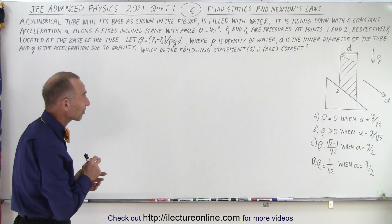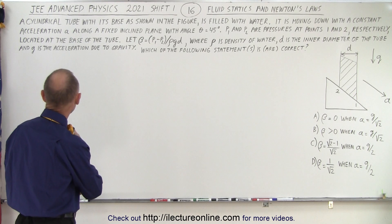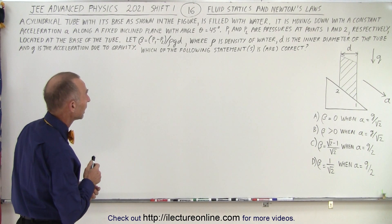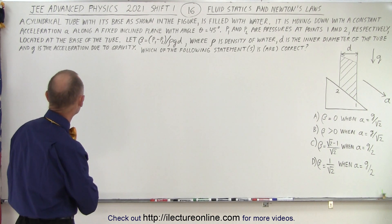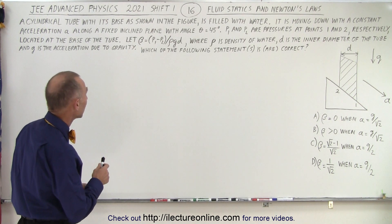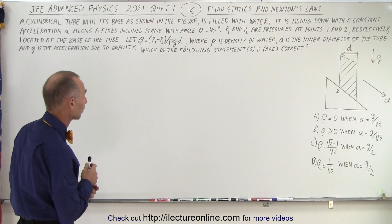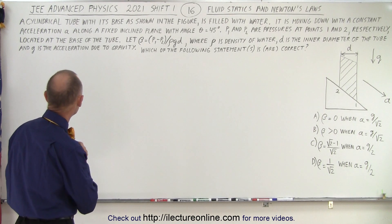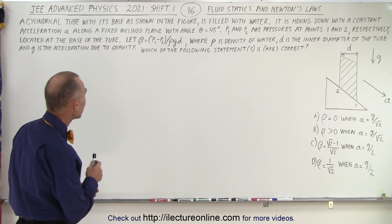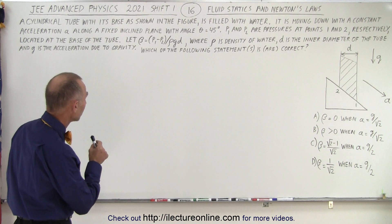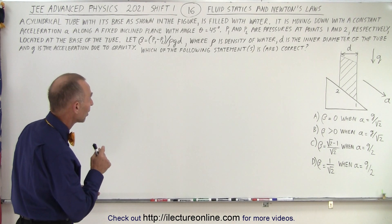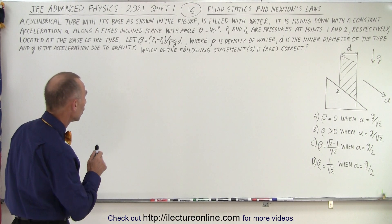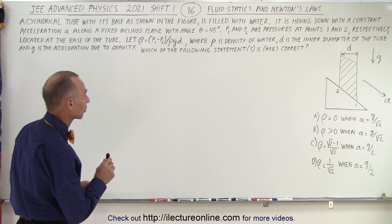It deals with fluid statics and Newton's laws. A cylindrical tube with its base as shown in the figure is filled with water. It is moving down with a constant acceleration a along a fixed inclined plane with angle theta equals 45 degrees. p1 and p2 are pressures at points 1 and 2 respectively located at the base of the tube. Let beta equal the difference between p1 and p2 divided by rho·g·d, where rho is density of water, d is the inner diameter of the tube, and g is acceleration due to gravity.